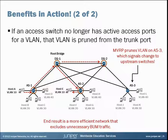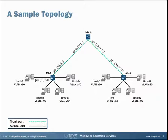Hopefully at this point you have some basic idea of what MVRP is and how it can benefit your network. Now I'd like to illustrate how to deploy MVRP in a basic network. Here we have three switches — a subset of the previous topology. We have two access switches, AS1 and AS2, and one distribution switch, DS1. We have four VLANs: V10, V20, V30, and V40, and both access switches are servicing those four VLANs.